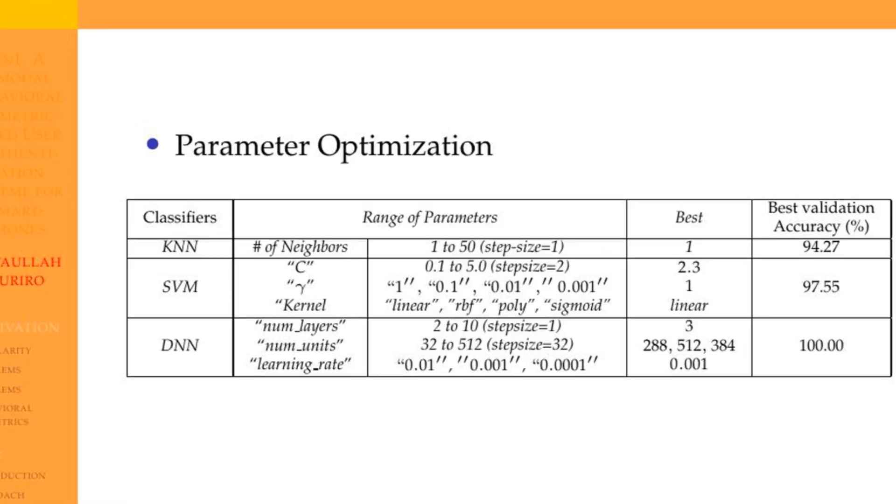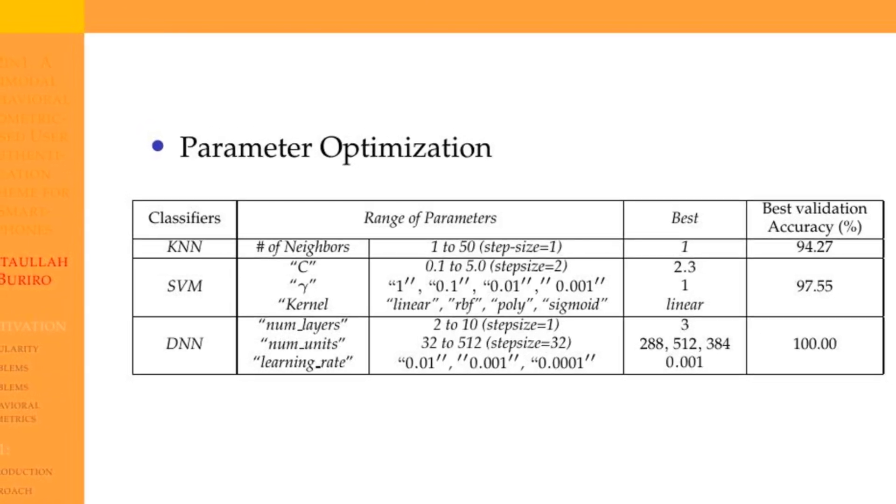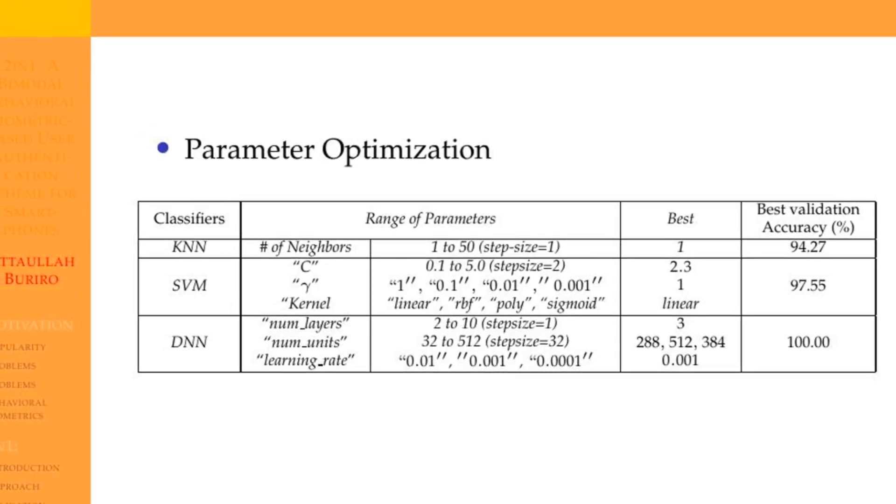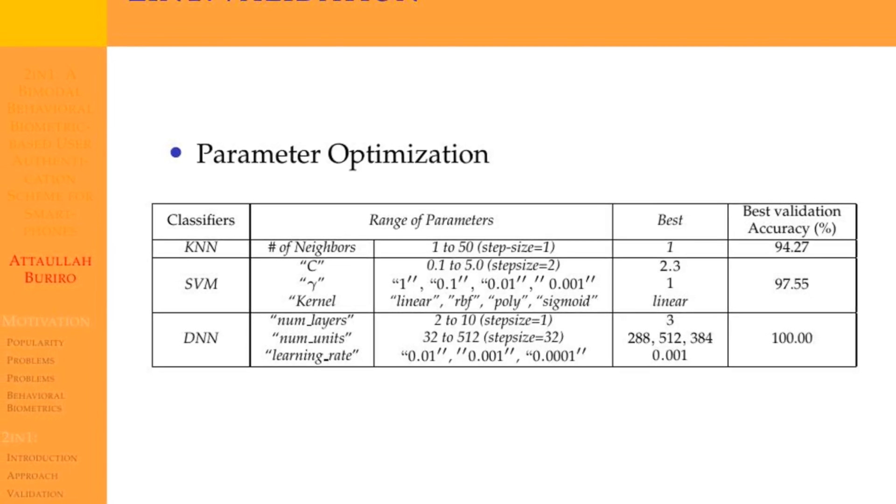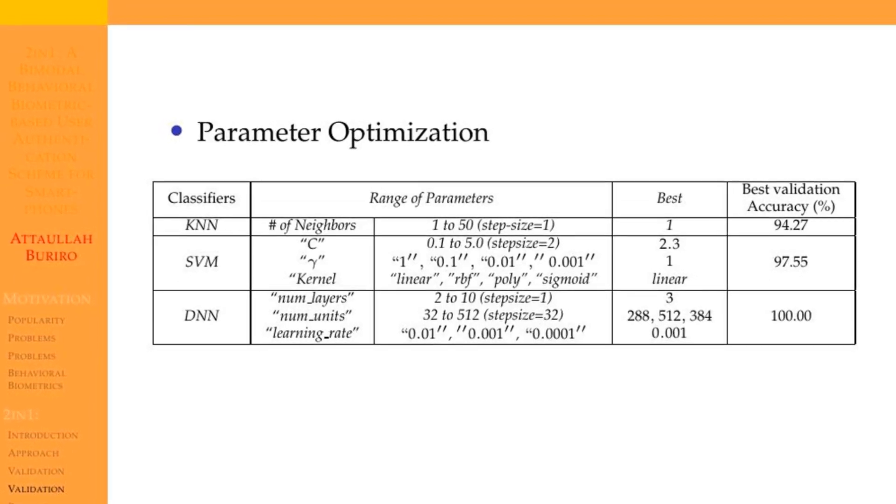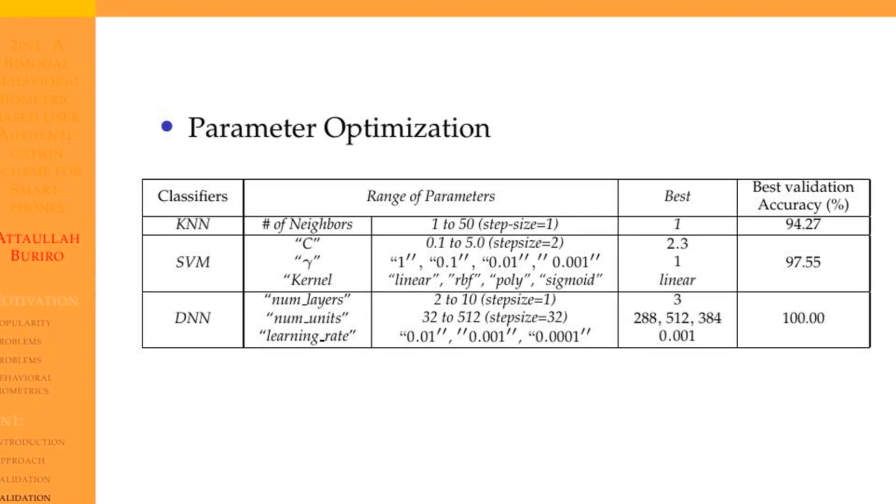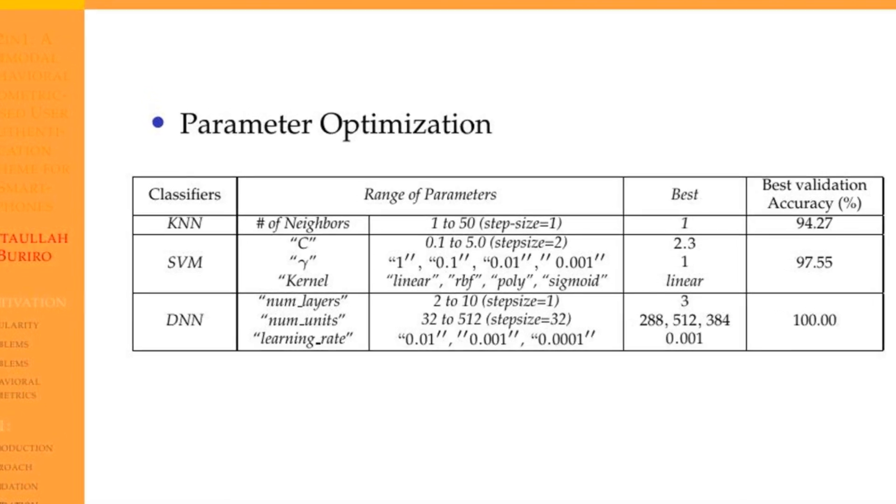Some common hyperparameters of DNN include learning rate, number of hidden layers, number of neurons in each layer, regularization parameters, batch size, and activation functions. We optimize the number of nearest neighbors for KNN, best kernel, C and gamma values for SVM.